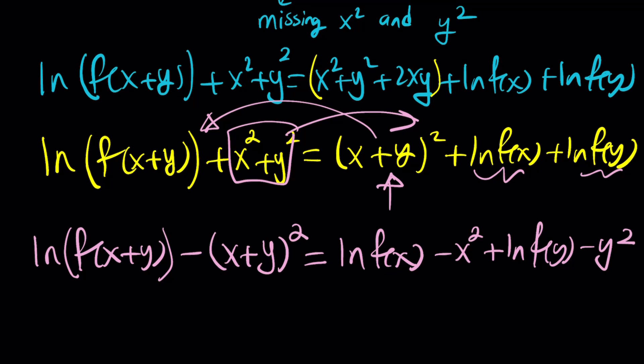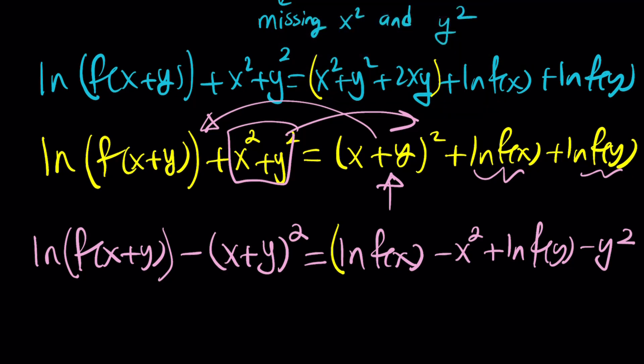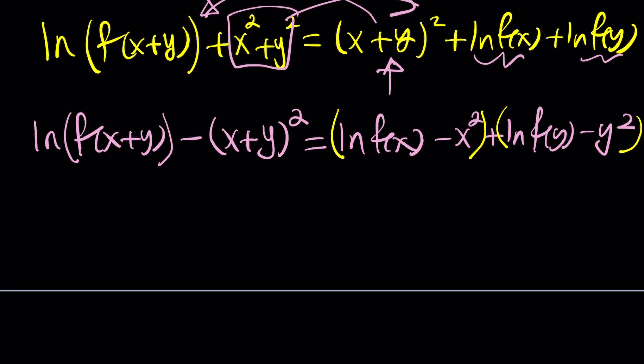Now this is really good. Do you know why? Think about it. Separate these two things. And guess what you see? You see a function that looks like ln of some function minus the variable squared. And the same thing here, and the same thing here.